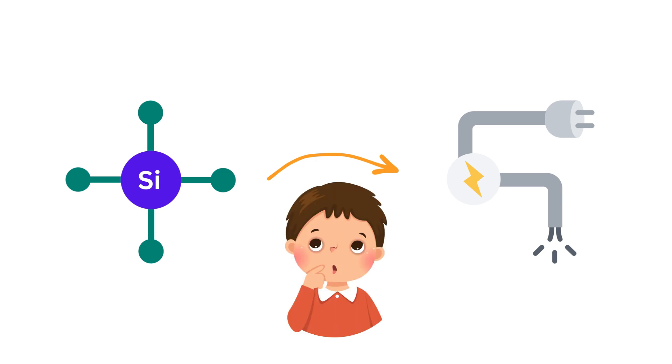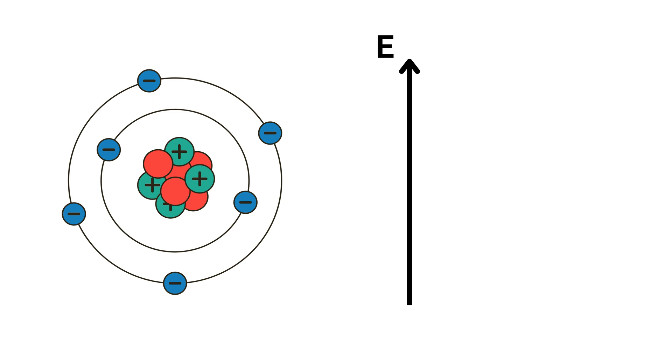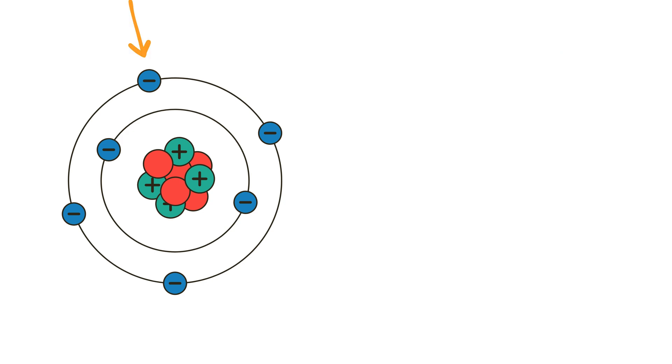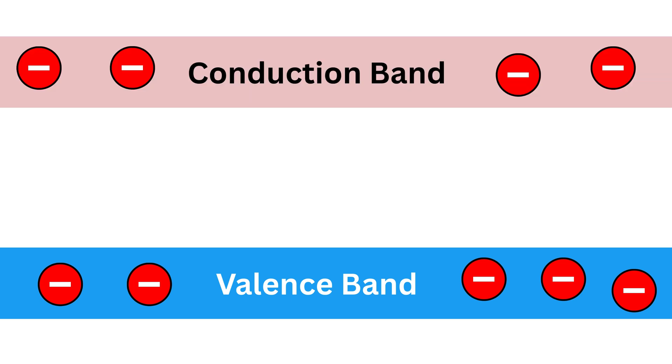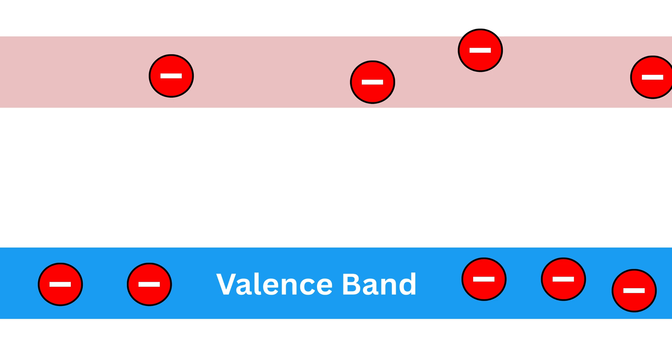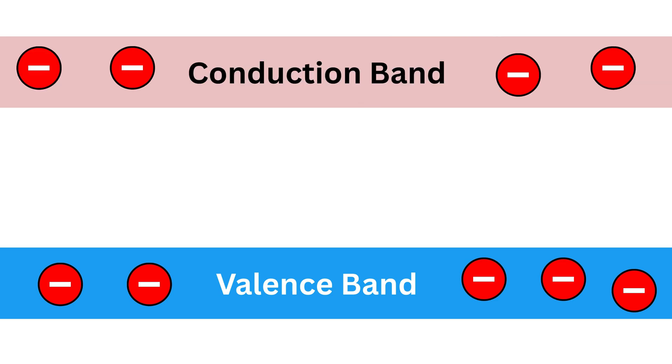Let's imagine energy levels of the electrons in an atom like floors in a building. The electrons in the outer shell of atoms live on a lower floor called the valence band. Now there is another floor higher up—this is called the conduction band. Electrons in this band are free to move around, and when they move, they carry electric current. Between these two floors is a gap: the band gap.